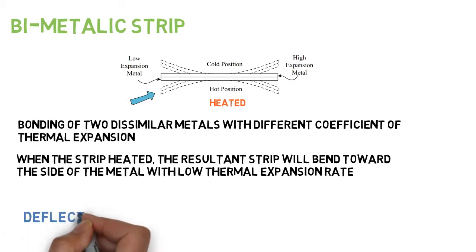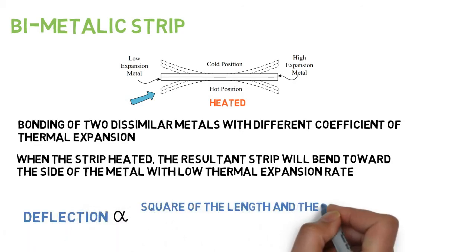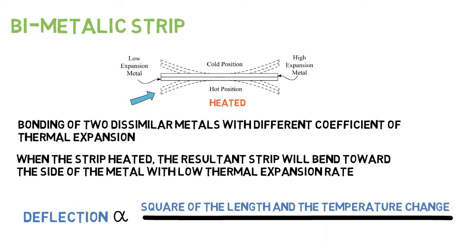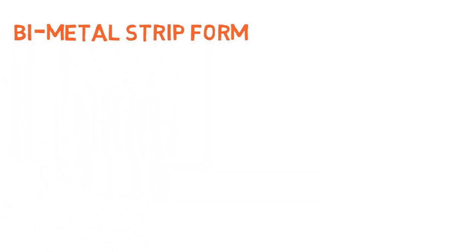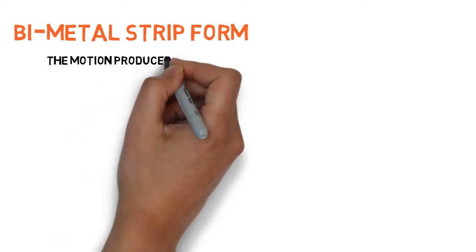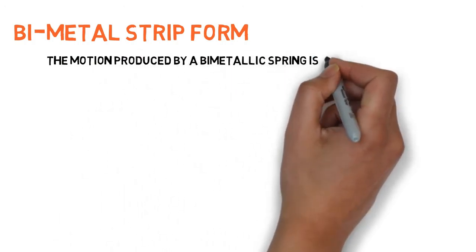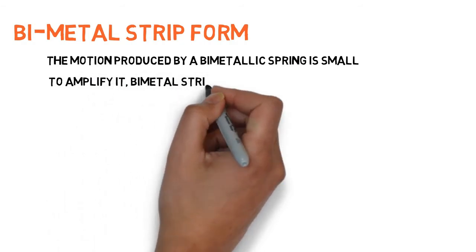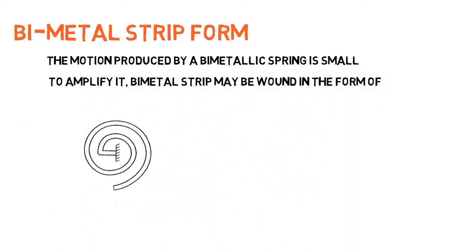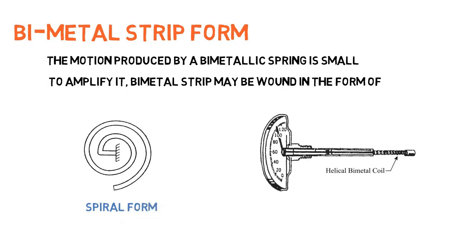Deflection is proportional to the square of the length and the temperature change, and inversely proportional to the thickness. The motion produced by a bimetallic spring is small. To amplify it in a reasonably sized space, the bimetallic strip may be wound in the form of a spiral or a helix.